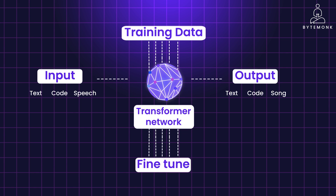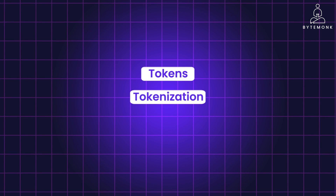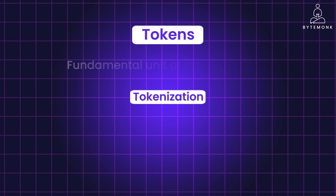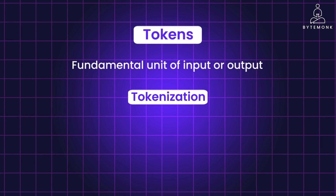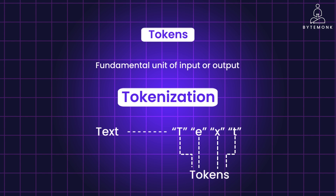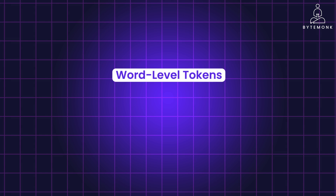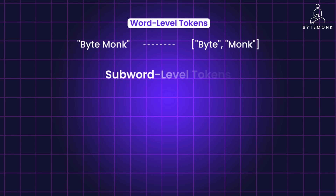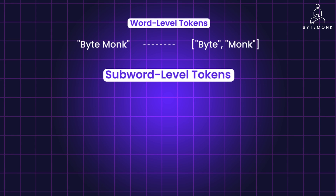Let's quickly understand the fundamentals of tokens and tokenization. A token is a fundamental unit of input or output from a model, and tokenization is the process of converting text into tokens. In word-level tokens, each token represents a whole word — for example, 'ByteMonk' can be tokenized into 'Byte' and 'Monk'. In subword-level tokens, each token can represent part of a word, which is useful for handling unknown words or reducing the model's vocabulary size.